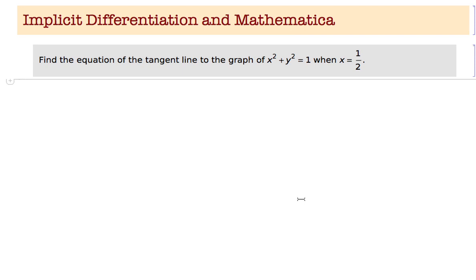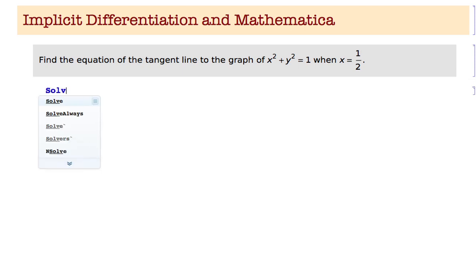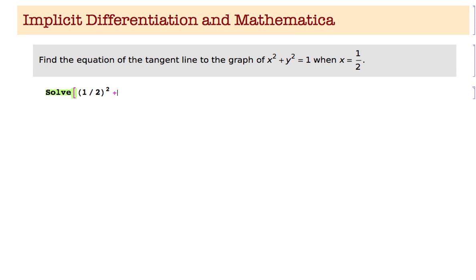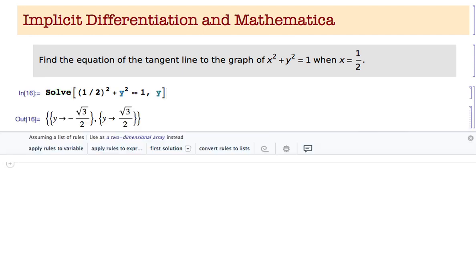The first thing we need to do is find the corresponding value of y. I'm going to solve the equation (1/2) squared plus y squared equals 1 — you have to use equals equals in Mathematica. I solve that for y and I get two solutions: minus square root of 3 over 2 and positive square root of 3 over 2.